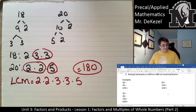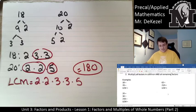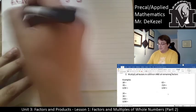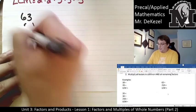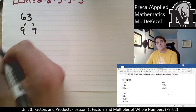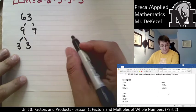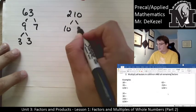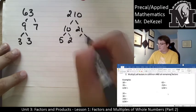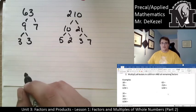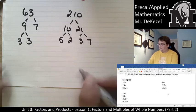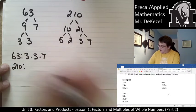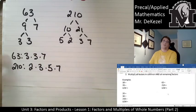Let's do the next one: 63 and 210. I've already done the factor trees in the last lesson, but we'll do them again. 63 breaks down into 9 and 7; 7 is prime, and 9 is 3 times 3. 210 ends in 0, so I write it as 10 times 21. 10 is 5 times 2, and 21 is 7 times 3. So 63 is 3 times 3 times 7, and 210 is 2 times 3 times 5 times 7.